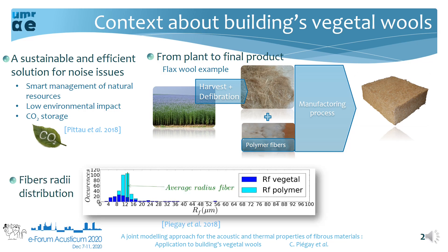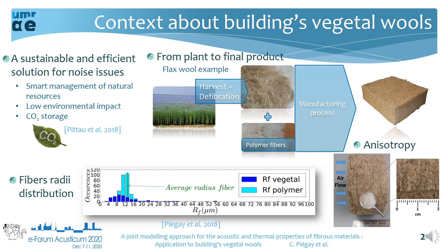Look at this bar chart. It shows the distribution of flax fiber radii characterized with scanning electron microscope pictures. You'll see that vegetal fiber radii are more spread than synthetic fiber ones. These polyester fibers are added to the vegetal ones, usually around 15 mass percent, to ensure fiber cohesion in a wool panel. As you can see in this sample, vegetal wools are anisotropic, having fibers organized in parallel layers. In the specific case of this presentation, we can define one main working direction perpendicular to the fibers, which corresponds to the main use orientation of these insulation materials.